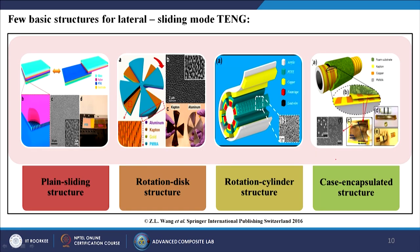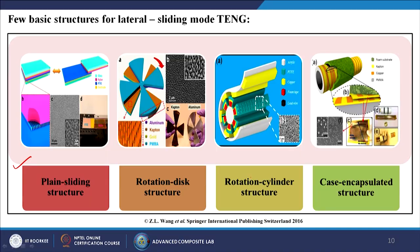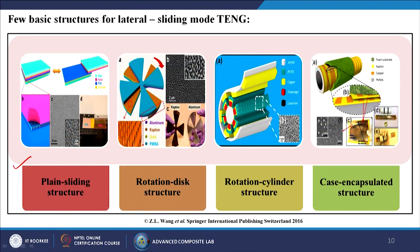Here are some basic structures for the lateral sliding mode of TENG. There is the plane sliding structure, where you simply slide. There is the rotation disc structure with two discs, one rotating on top of the other. There is also the rotation cylinder structure — a piston-like arrangement with a rotor rotating. And finally the case-encapsulated structure. In all cases, the material is rubbing on the other material in circular, cylindrical, or linear sliding motions.